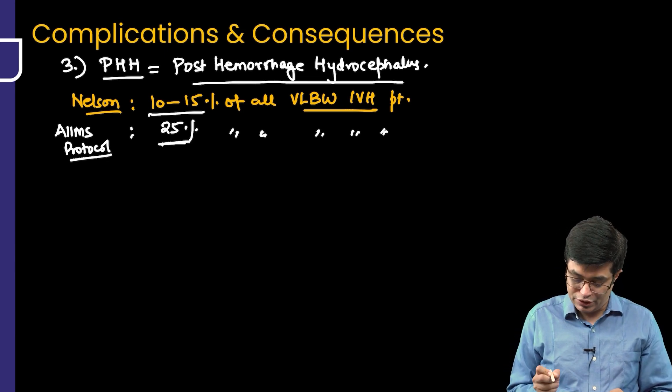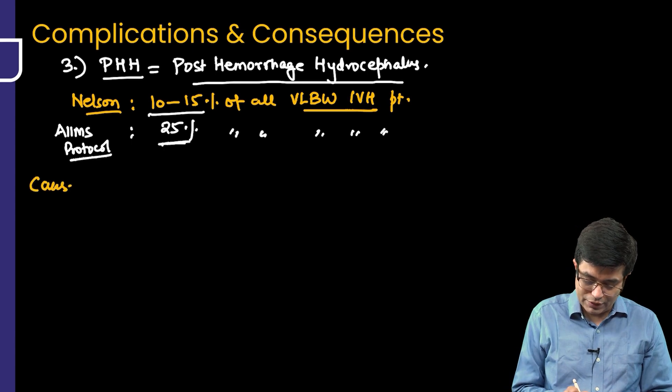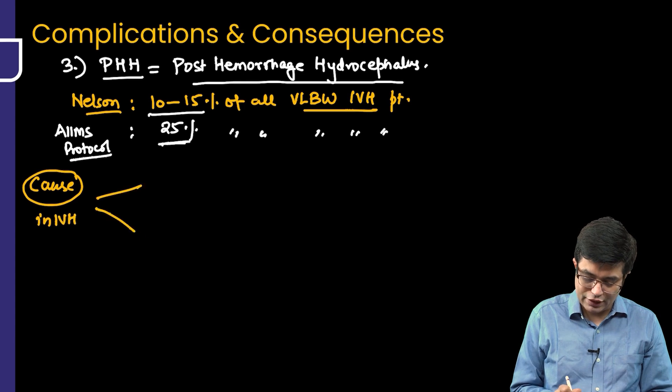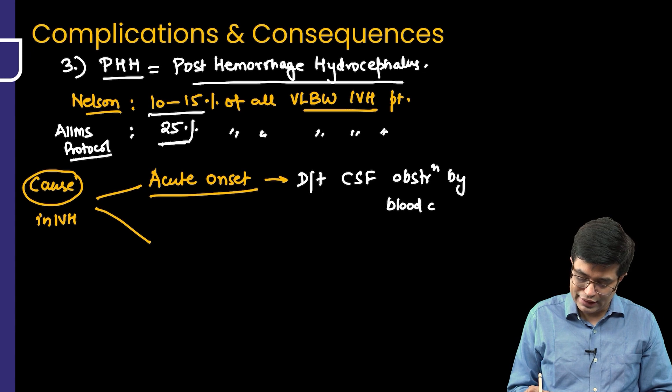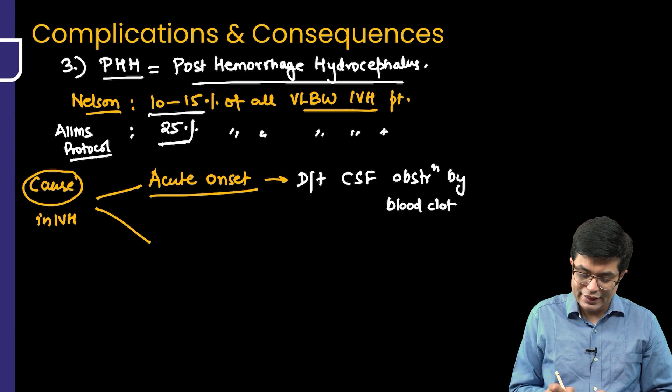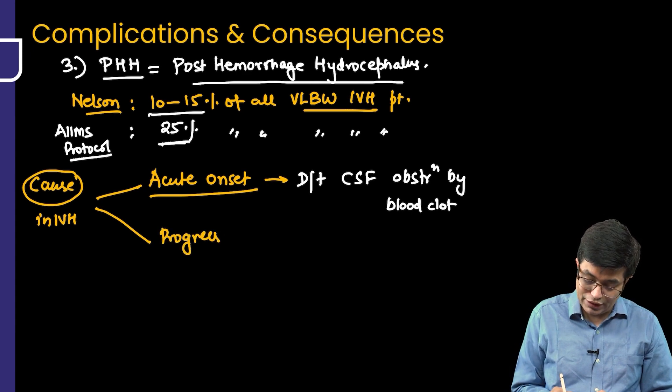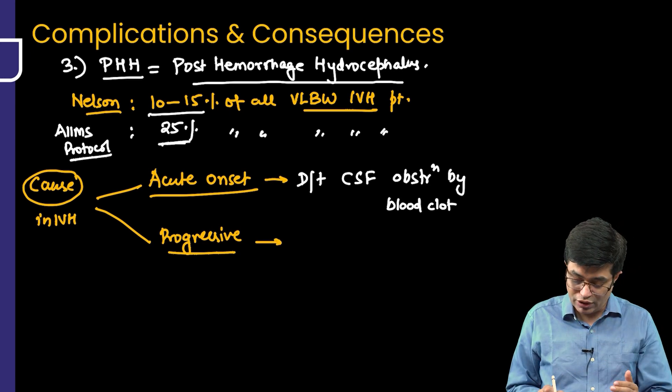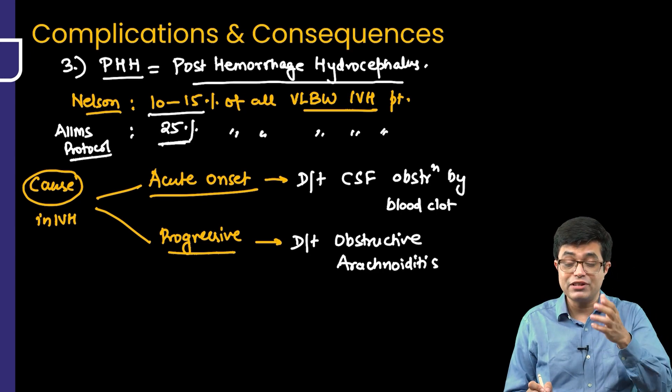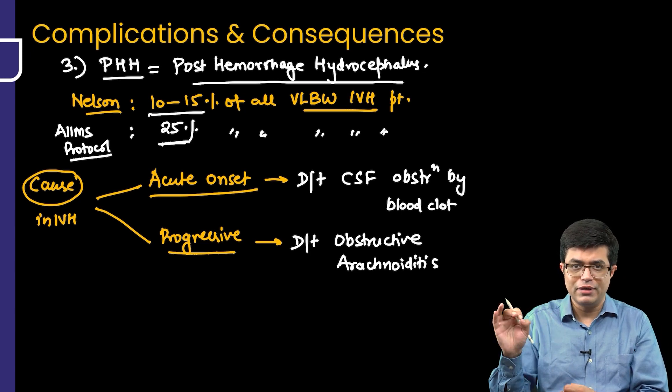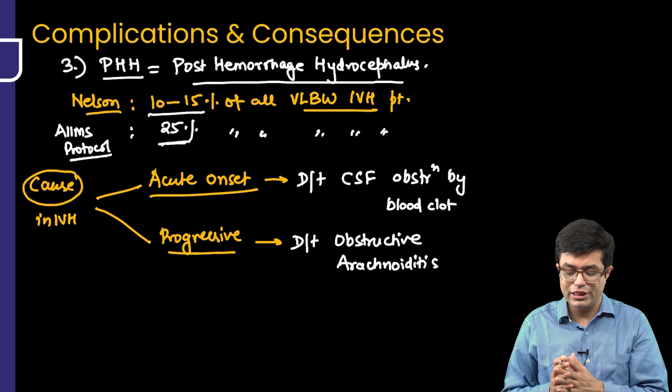Why will hydrocephalus develop in the patient? What is the cause of PHH to develop in IVH? There can be two reasons. One, there can be acute onset of hydrocephalus. Acute onset will occur due to obstruction to the CSF, due to CSF obstruction by the blood clot that will cause obstruction and obstructive kind of hydrocephalus can be seen. Second is progressive hydrocephalus, which is actually very dangerous. This will occur due to obstructive arachnoiditis. There will be a cascade of inflammation which will start which will result in the blocking of the arachnoid layer, arachnoid transport of CSF, flow of CSF and that will be called as obstructive arachnoiditis.